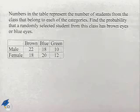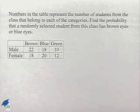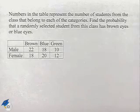Now let's look at another problem dealing with finding probabilities from a table. Numbers in the table represent the number of students from the class that belong to each of the categories. Find the probability that a randomly selected student from this class has brown eyes or blue eyes.